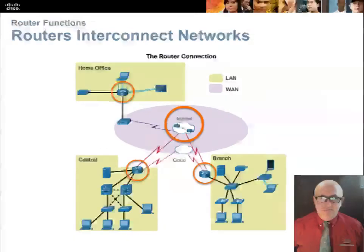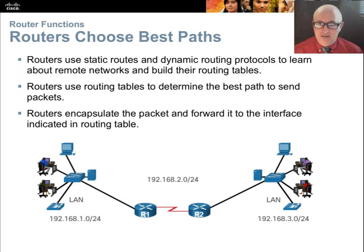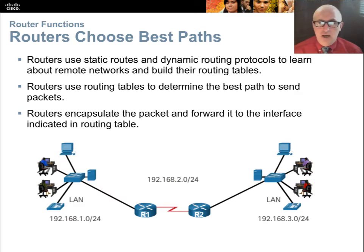Routers interconnect networks. Routers choose best paths — in fact, making best path decisions is the primary job of the router. Switches don't do that; switches just switch — they quickly find a route to the destination and switch it. A router inspects all available routes and compares them using metrics, which are decision criteria like distance, delay, reliability, or other factors. It considers those for each path available to a given destination, chooses the best path, then forwards it to the correct interface — that switching component at the end. The thinking is done by dynamic routing protocols, which learn paths and develop routing tables.